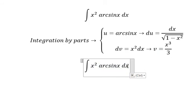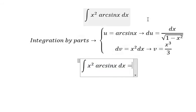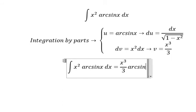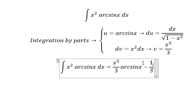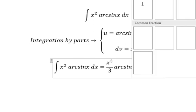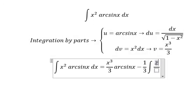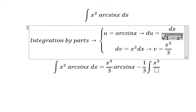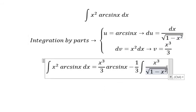So we put u multiplied by v. So we have negative 1 over 3. The integral of x to the power of 3 over the square root. And we have dx.